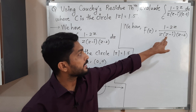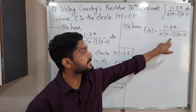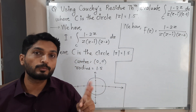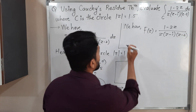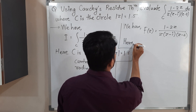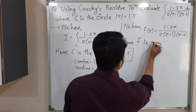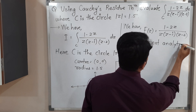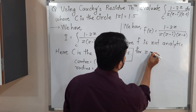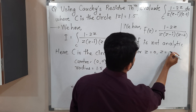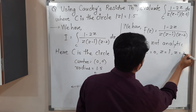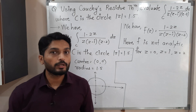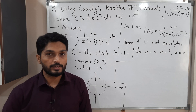If z equals 0, the denominator is zero. If z equals i, then (i minus i) gives zero again. And if z equals 2, then (2 minus 2) gives zero. So f is not analytic for z equal to 0, z equal to i, and z equal to 2. These are the singular points of the function.